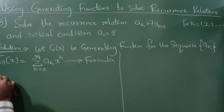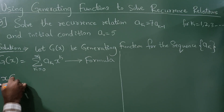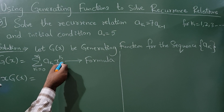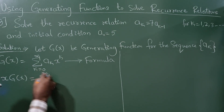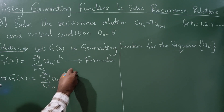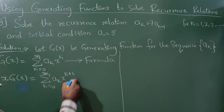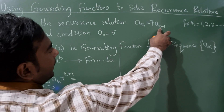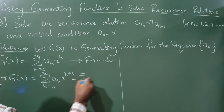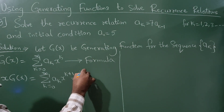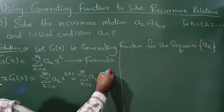Since the recurrence has k minus 1, the degree is 1, so you need to multiply the equation by x on both sides. This shifts the summation so k goes from 0 to infinity and becomes k plus 1, giving summation k from 1 to infinity of a_{k-1} · x raised to k.